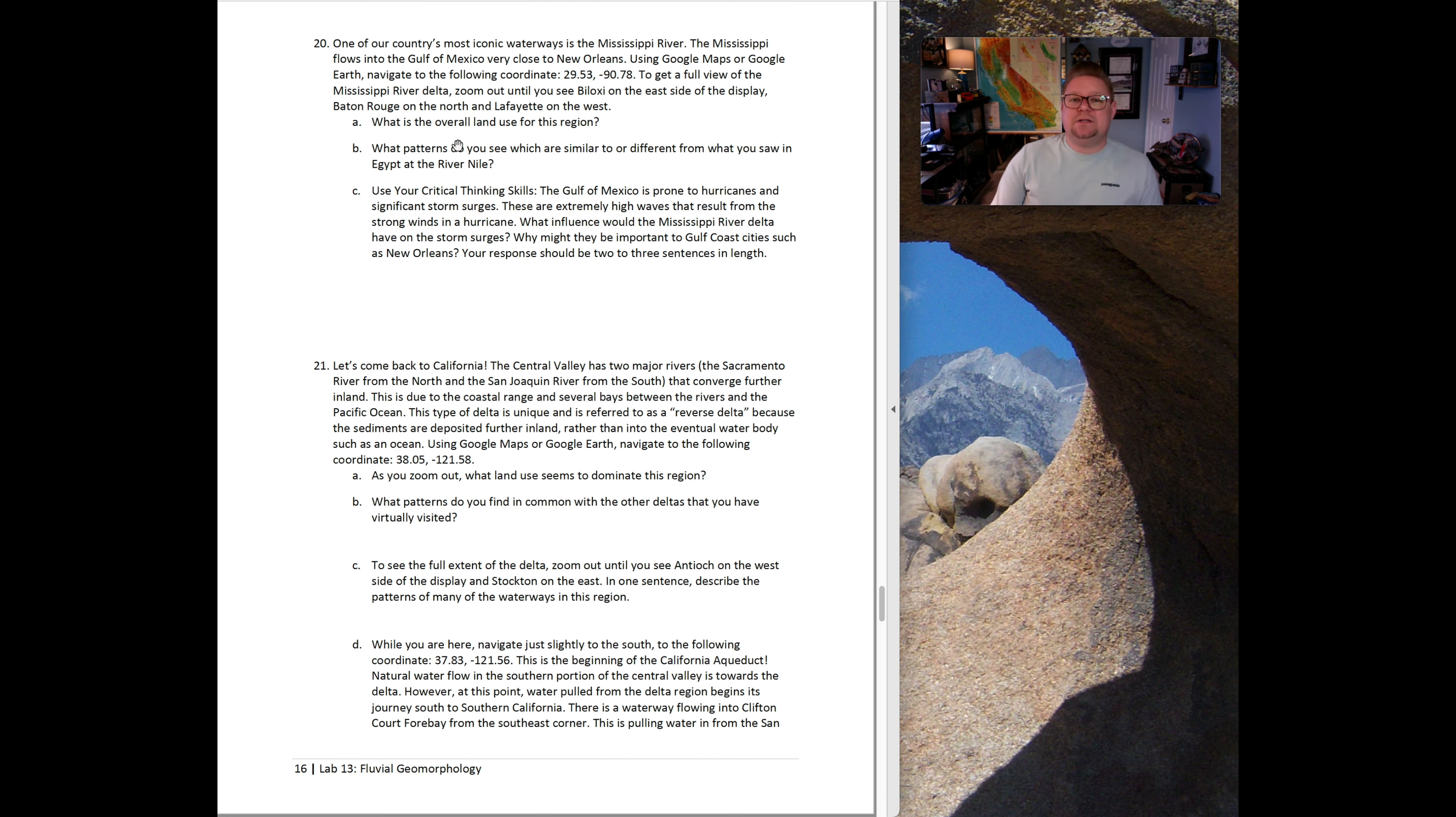Question 20 says one of the country's most iconic waterways is the Mississippi River. The Mississippi flows into the Gulf of Mexico, very close to New Orleans. Using Google Maps or Google Earth, navigate to the following location. It gives you the latitude and longitude. To get a full view of the Mississippi River Delta, zoom out until you see Biloxi to the east and Baton Rouge to the north and Lafayette on the west. What is the overall land use of this area? What patterns do you see that might be either similar or different to what you saw in the Nile? About the Gulf of Mexico is prone to hurricanes and significant storm surges. There are extremely high waves that result from strong winds and a hurricane. What influence would the Mississippi River Delta have on a storm itself? Why do you think it might be important to the Gulf Coast cities such as New Orleans?